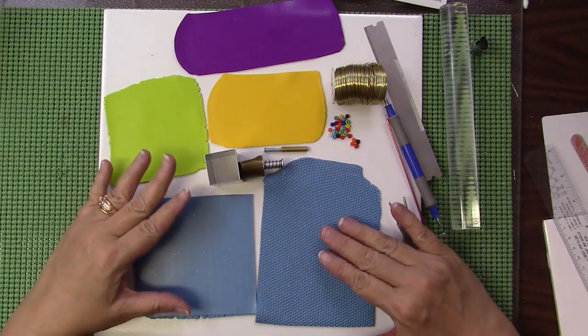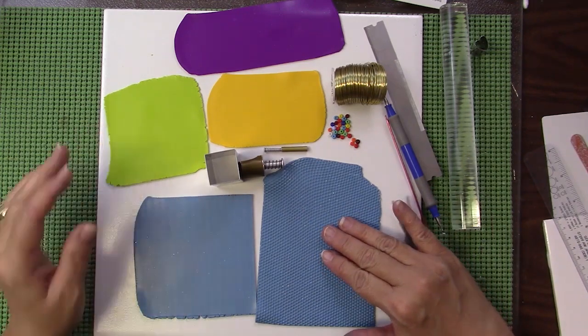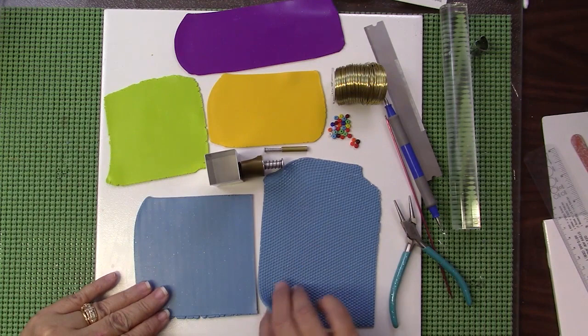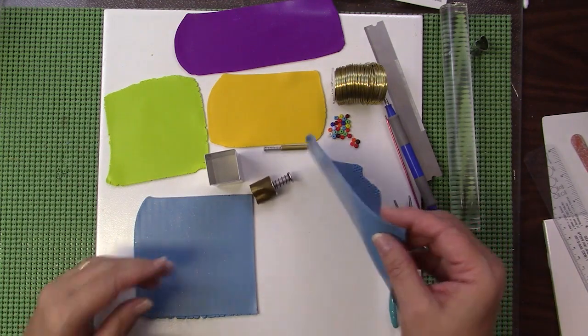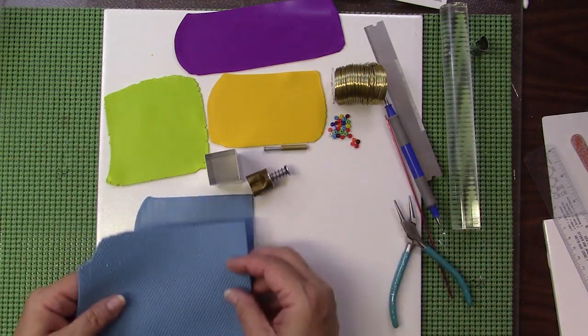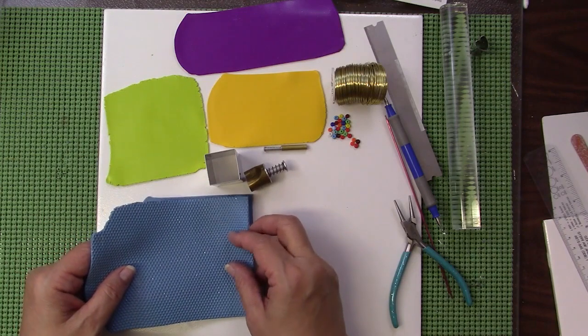The materials that we'll use for this project are various colors of clay. We will use some blue for the base and I've got two sheets rolled out to the number two setting and one sheet is textured.